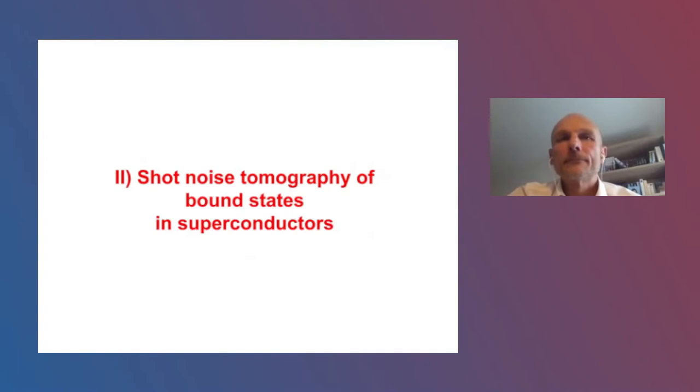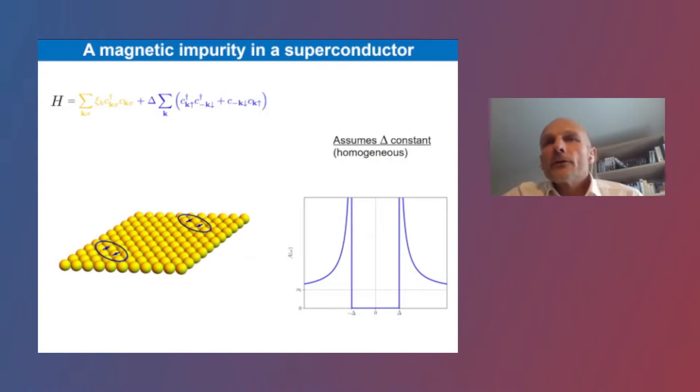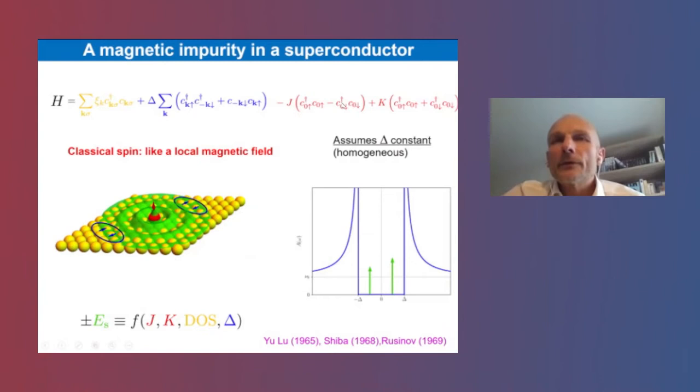Let's start with the shot noise tomography. As I said, the system of interest is a single magnetic impurity inside the superconductor. Without impurity, this is the typical spectral feature with a nice gap. When we add magnetic impurity, which is exchange coupled to the substrate, I'm modeling the impurity as a classical magnetic field and eventually some non-magnetic scattering. This gives rise to these bound states, which are generally asymmetric inside the gap.